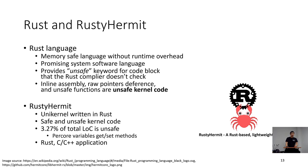Rust is a memory-safe language without runtime overhead because its compiler guarantees memory safety at compile time. Rust is now getting attention as a system software language with its benefits. However, the Rust compiler cannot cover all operating system code because writing an operating system requires some memory-unsafe code, such as inline assembly and raw pointer dereference. Rust provides an unsafe keyword, and the compiler does not check memory safety for the unsafe code block. Unsafe code such as inline assembly and raw pointer dereference must be specified as unsafe with the keyword.